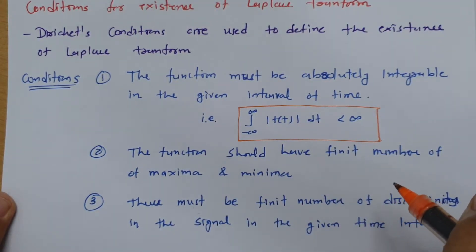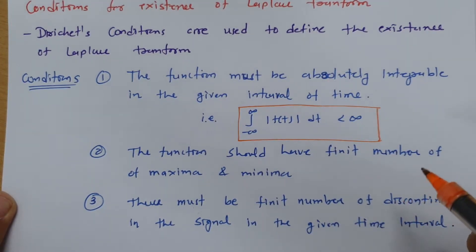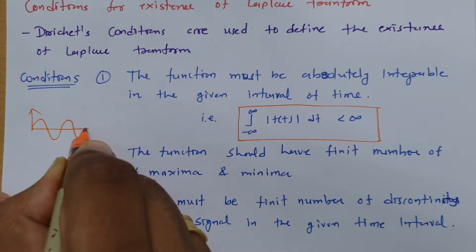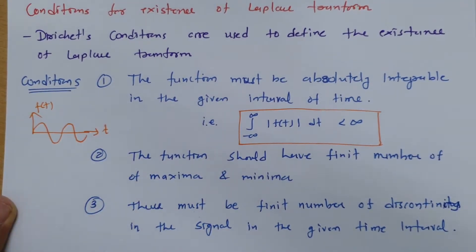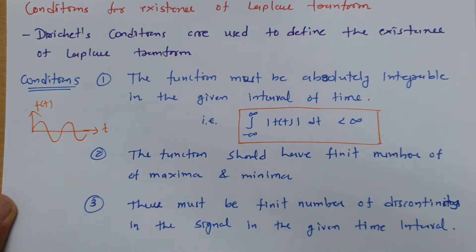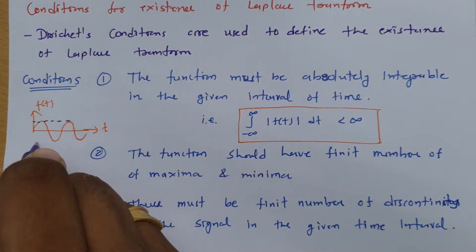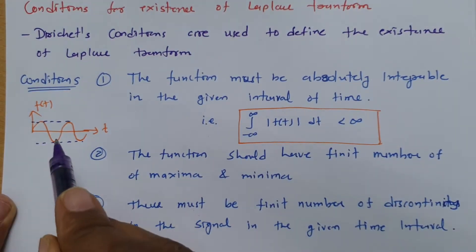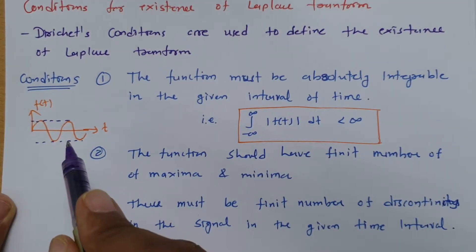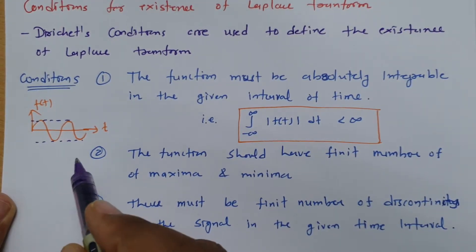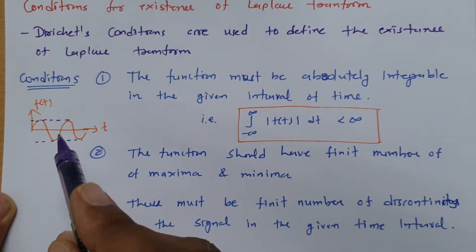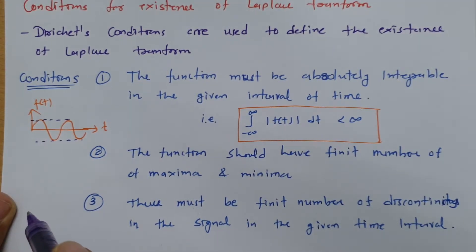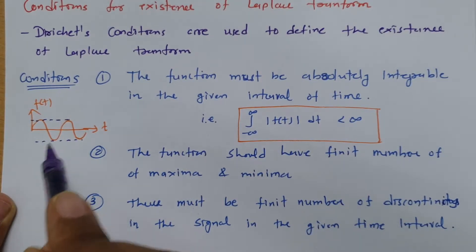The second condition is that the function should have a finite number of maxima and minima. For example, if you have a sine wave, it has only one maxima and one minima over a finite interval. Whatever function you are observing, it should have a finite number of maxima and minima. This is the second condition.